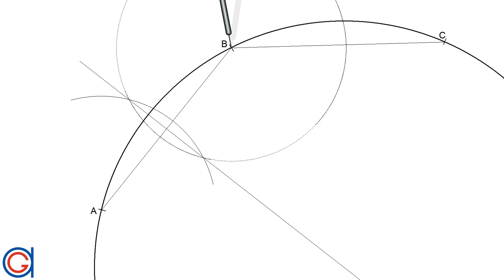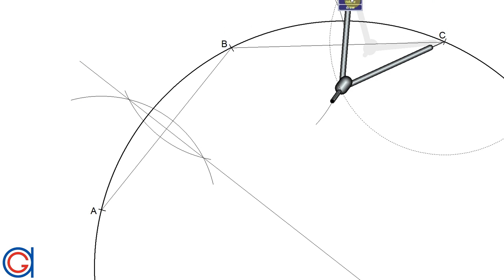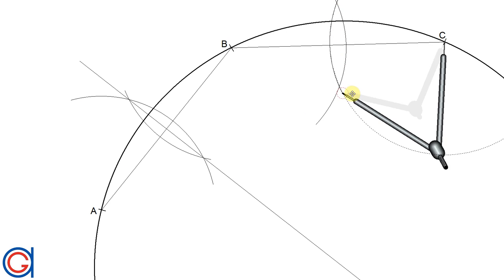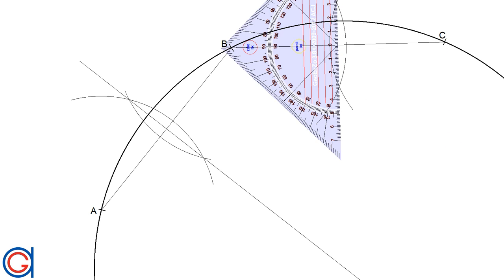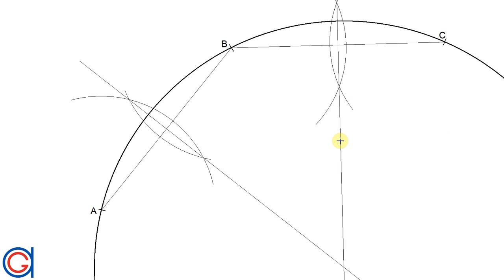And now we repeat this process with line segment BC. Again, setting our compass slightly longer than the length BC, we scribe two arcs as can be seen here. And again we draw the perpendicular bisector by passing through the two intersecting points.